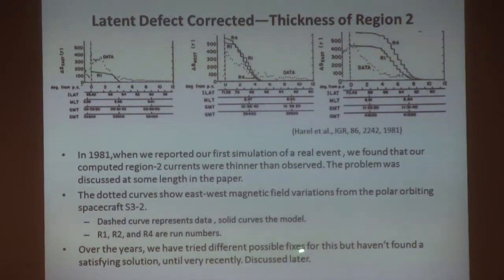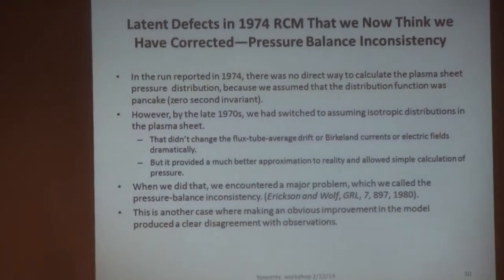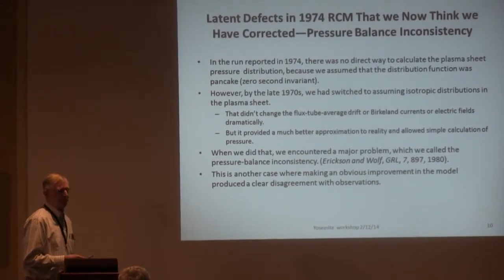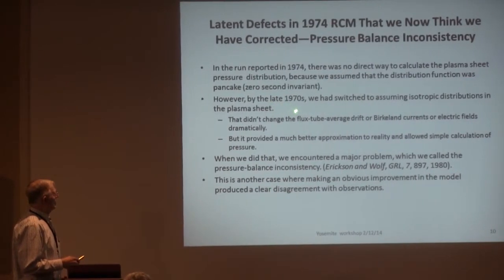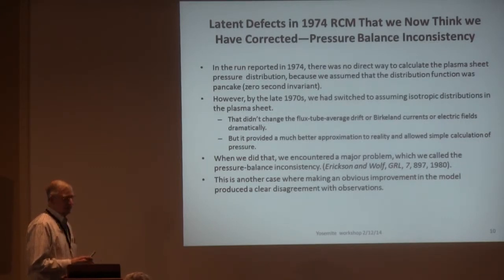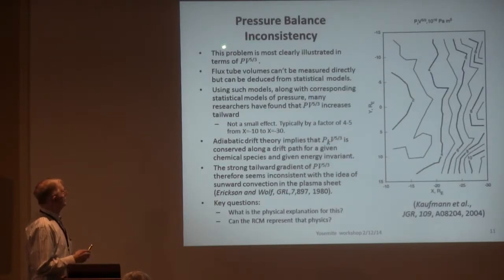Over the years we tried many possible fixes for that and nothing worked until very recently — I'm going to come back to that. The second big discrepancy: when we actually made an isotropic distribution in the plasma sheet so we could calculate plasma sheet pressures and compare them with data, they didn't agree. That was a major problem. We pointed it out in 1980 papers and called it the pressure balance inconsistency. Making an obvious improvement in the model produced a nice clear disagreement with observations, which however turned out to be informative.